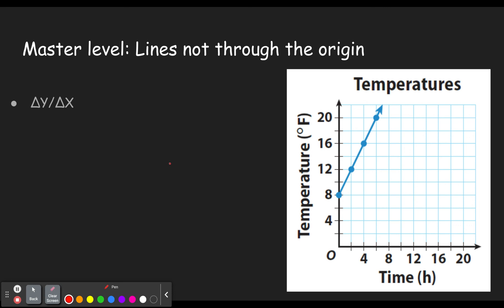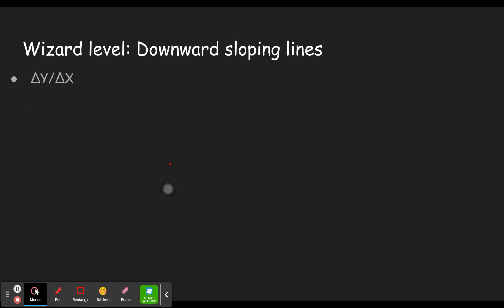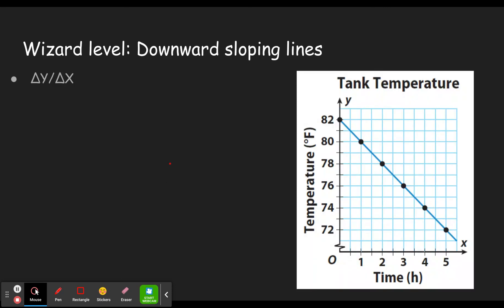Last example has downward sloping lines. So downward sloping lines. What in the world is going to happen with a downward sloping line? Alright. Let's go ahead and pick. You know what? I kind of like picking this whole thing. Why? Because it went from 82 to 72. Makes the math so easy.